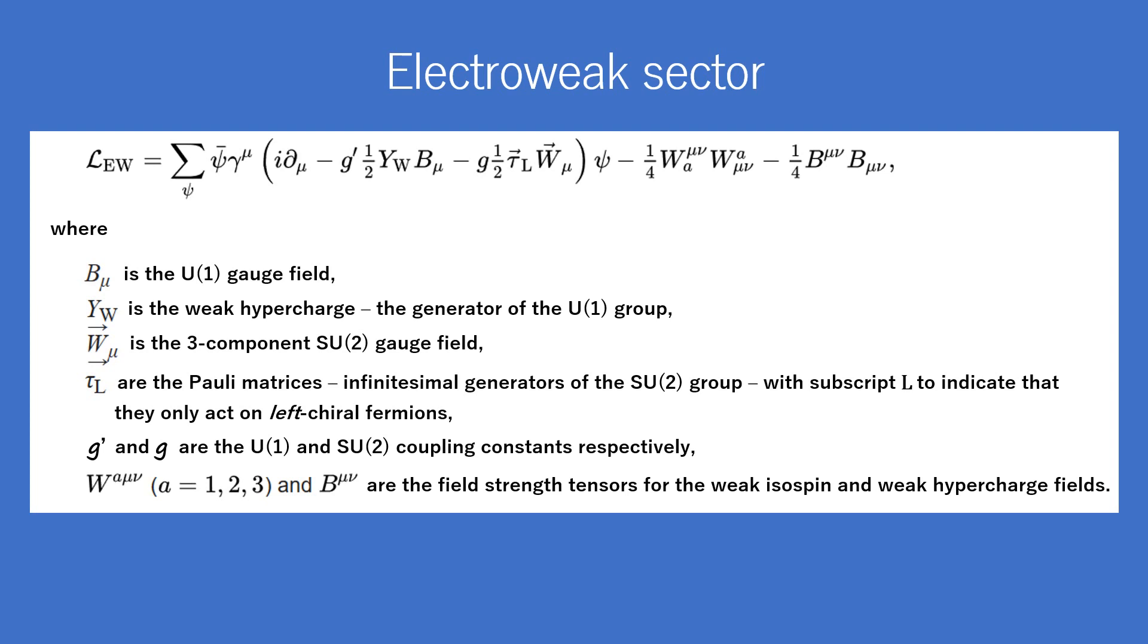τ_L are the Pauli matrices, infinitesimal generators of the SU(2) group, with subscript L to indicate that they only act on left chiral fermions. g' and g are the U(1) and SU(2) coupling constants, respectively. W^a_μν and B_μν are the field strength tensors for the weak isospin and weak hypercharge fields.